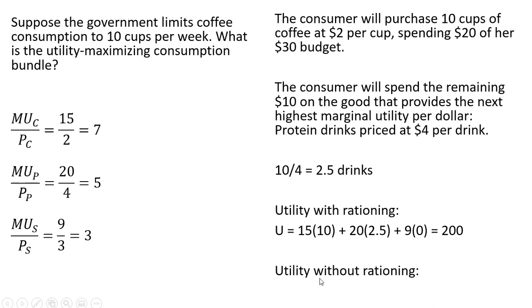You'll notice without rationing, total utility was higher. The person bought 15 cups of coffee. Plugging that 15 into the utility function and zero for the other drinks, the consumer had 225 units of satisfaction.